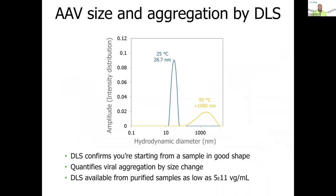We also have DLS — dynamic light scattering. We can measure size at the initial temperature and at the final temperature, or do a thermal ramp with DLS as the measurement to look at the effect of temperature on size. AAVs are typically on the scale of about 20 to 30 nanometers. The example here shows up at 28.7 nanometers, and after heating the sample to 95 degrees Celsius, the size increases to well over 1,000 nanometers — one micron. This gives a very nice orthogonal confirmation that what you saw by fluorescence and SLS is real: the sample has truly unfolded and aggregated.